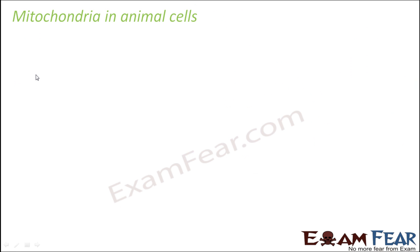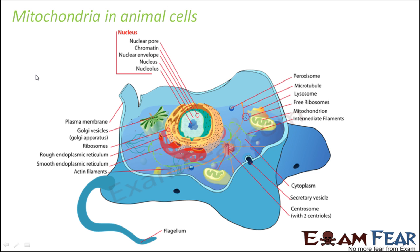Let us look at mitochondria in an animal cell. In this animal cell diagram, the mitochondria are visible here — there can be many in number, and they are uniformly distributed throughout the cytoplasm. Here you can see the outer membrane, the inner membrane, the cristae, and the matrix — everything is visible.